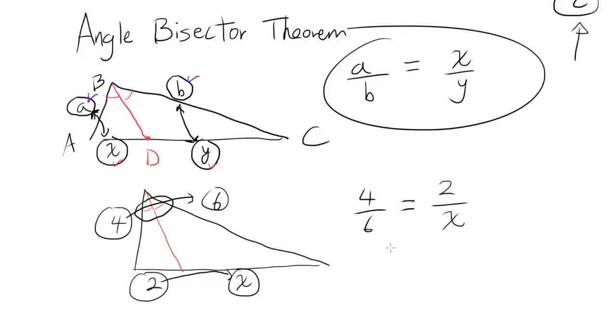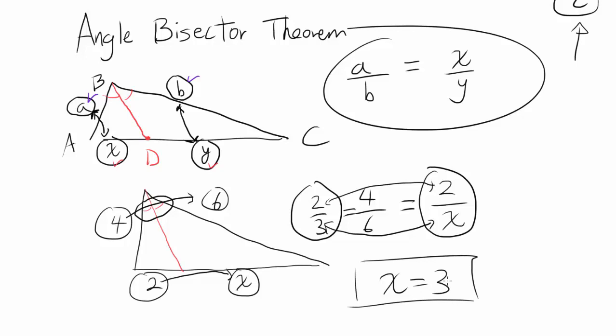So this gives you 4 over 6 is the same thing as 2/3, so you know 2/3 is the same thing as 2 over X. It's pretty obvious since the 2s are the same up top, X and 3 have to be the same. So our X is 3, and we are done. And this is what angle bisector theorem is.